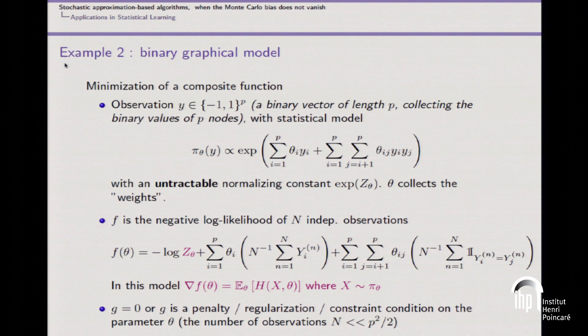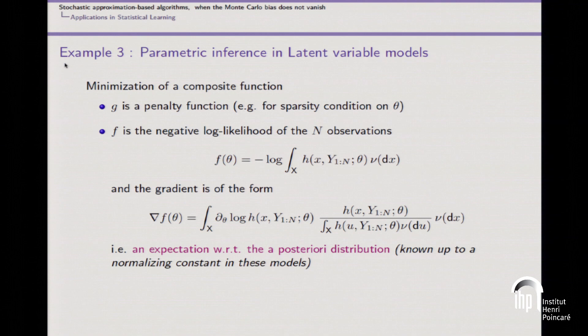If you compute the gradient of F with respect to theta, you obtain a simple term plus a term that is the expectation of a function where the expectation is with respect to a random variable drawn under the distribution pi_theta. In practice this expectation cannot be computed because pi_theta is known only up to a normalizing constant, so you are in a case where the gradient is not available exactly.